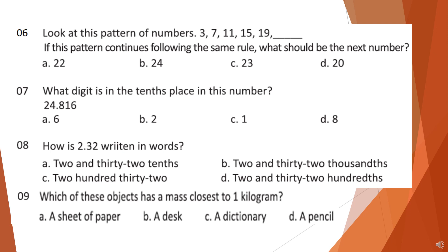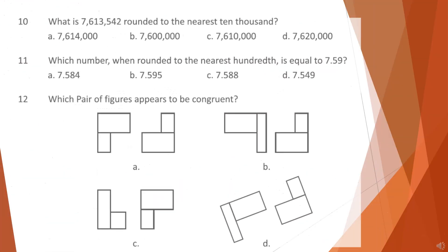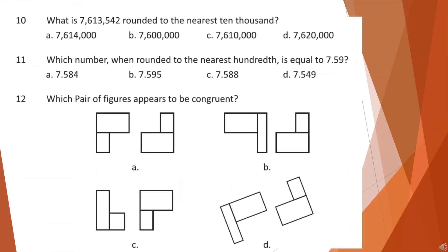Look at the options and choose your answer. Question 10: What is 76,13,542 rounded to the nearest 10,000?